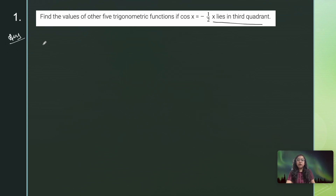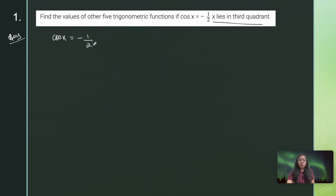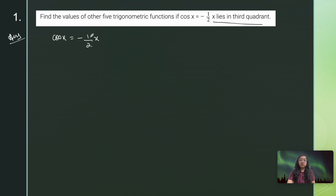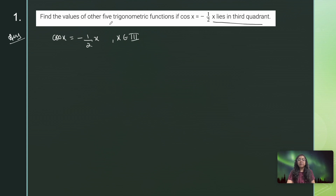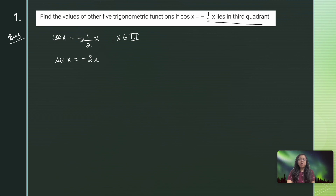Question 1: Find the value of the other 5 trigonometric functions if cos x = −1/2 and x belongs to the third quadrant. Since cos x = −1/2, we know sec x = −2 (both cos and sec are negative in the third quadrant).